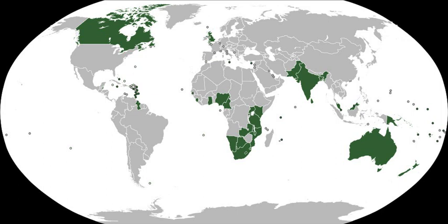Queen Elizabeth II, in her address to Canada on Dominion Day in 1959, pointed out that the Confederation of Canada on 1 July 1867 had been the birth of the 'first independent country within the British Empire'. She declared it also marks the beginning of that free association of independent states which is now known as the Commonwealth of Nations. As long ago as 1884, Lord Rosebery had described the changing British Empire as a 'Commonwealth of Nations'. Conferences of British and colonial prime ministers occurred periodically from the first one in 1887, leading to the creation of the Imperial Conferences in 1911.